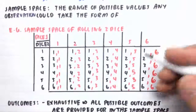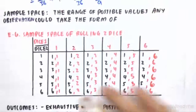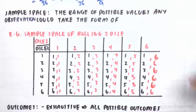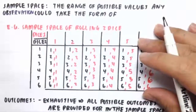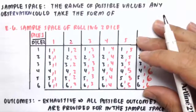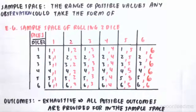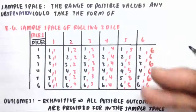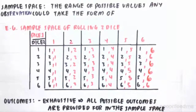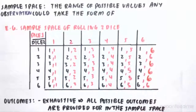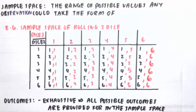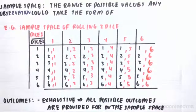The outcomes in the sample space must first be exhaustive — meaning all possible outcomes are provided for in the sample space. They must also be mutually exclusive, meaning no two outcomes can simultaneously occur after one event. For example, if you roll a dice you can't roll a one and a two at the same time — you can only get one face value. Similarly, if you flip a coin you can only get heads or tails, not both in one flip. So if you roll a dice, you can't get a six and a two at the same time.